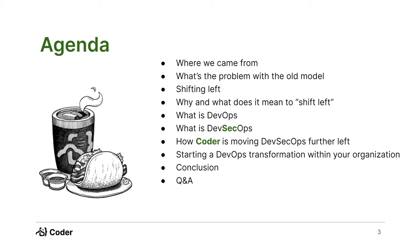With that old model, there were lots of problems that need to change. We came out with this idea of shifting left, which I'll go into — what does it even mean to shift left and why do we do this? I'll go into DevOps itself and how DevSecOps specifically solves this problem, and then how Coder is actually moving DevSecOps further left in the SDLC pipeline. Finally, I have a couple of points about DevSecOps transformations within organizations, and a conclusion Q&A session available afterwards.